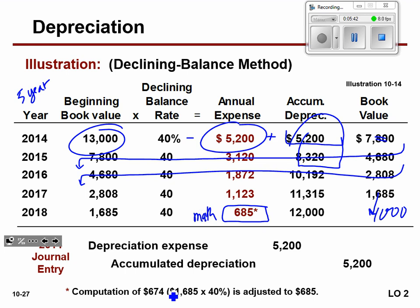I wanted you to truly understand that. This forced math applies to all depreciation methods — it's just that the other methods are presented so the math works out naturally without forcing. This one requires it. Are you ready to try this?